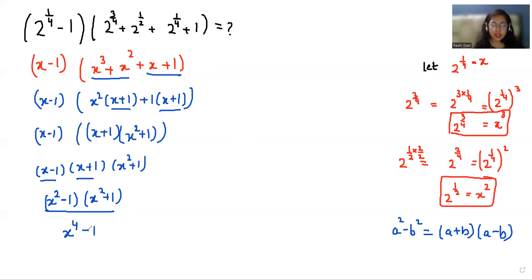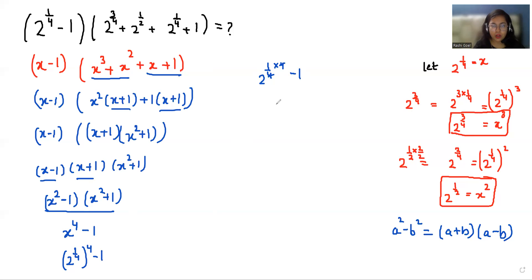Now we know the value of x is 2^(1/4). So we can write it as (2^(1/4))^4 minus 1. The 4s cancel out, giving 2^1 minus 1, which is 2 minus 1. So the value is 1 for this equation.